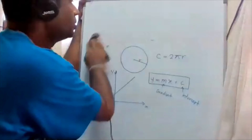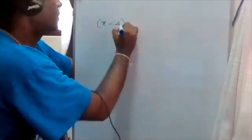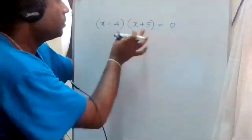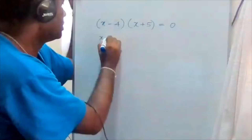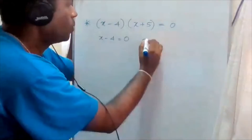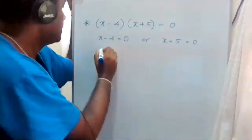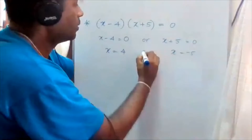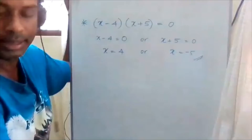Now let's discuss factorization. If you are given a quadratic equation with two factors, and the product of two factors equals zero, then either one of them must equal zero. So if you have (x minus 4)(x plus 5) equals zero, then x minus 4 equals zero or x plus 5 equals zero. This gives x equals 4 or x equals negative 5 as the two solutions.